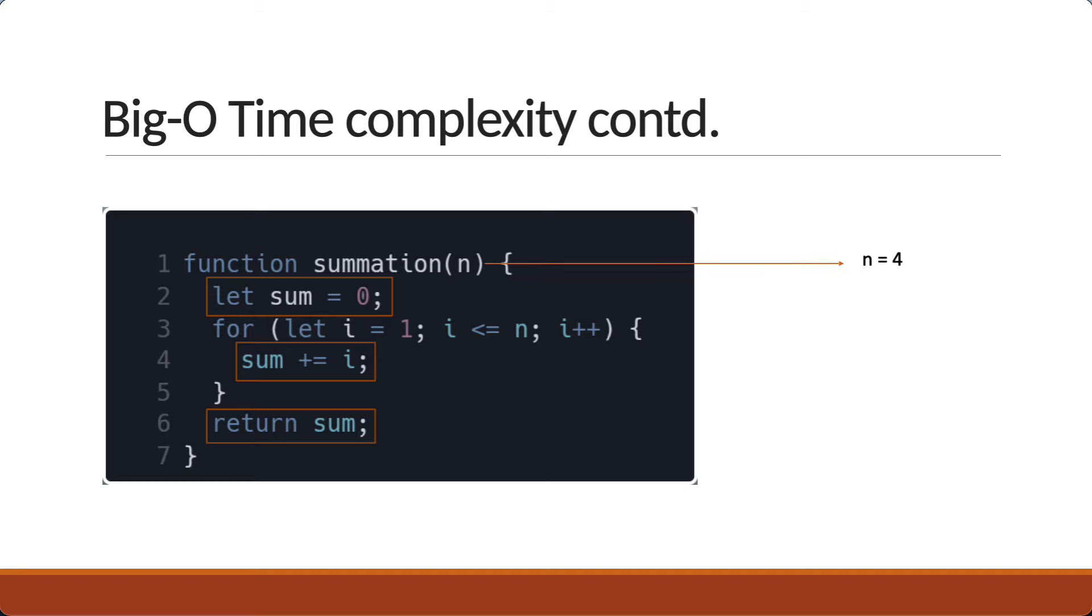Now given n equals 4, let's calculate the number of times each statement is executed. Line 2 executes only once. Line 4, however, executes 4 times: i equals 1 to i equals 4. Line 6 again is executed just once. So the total count is 4 plus 2.